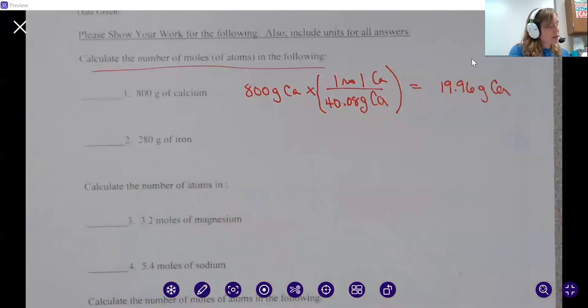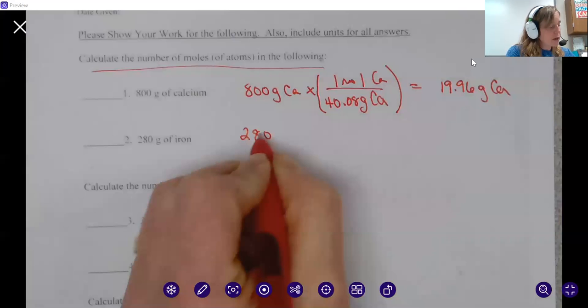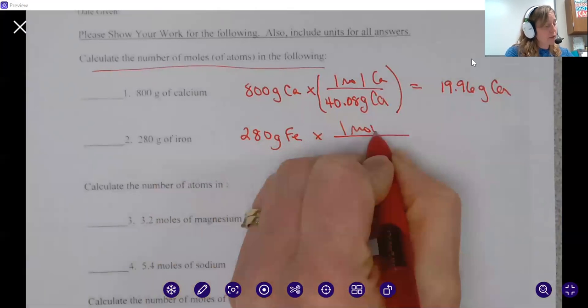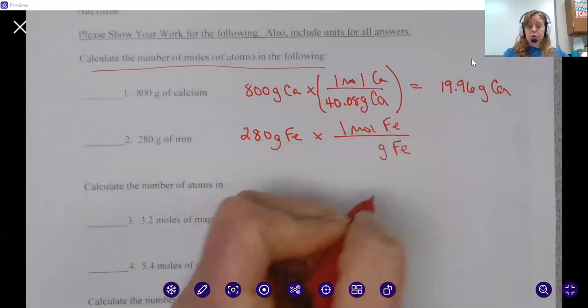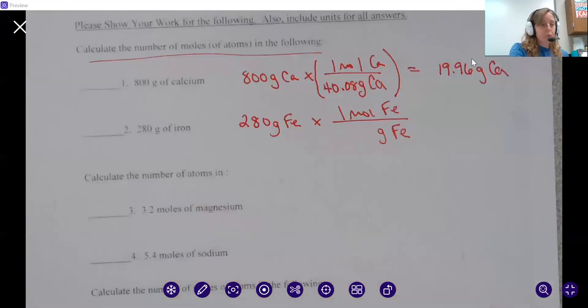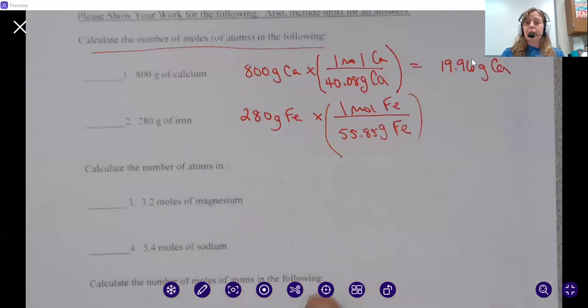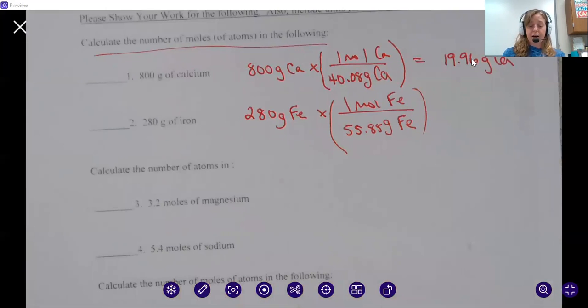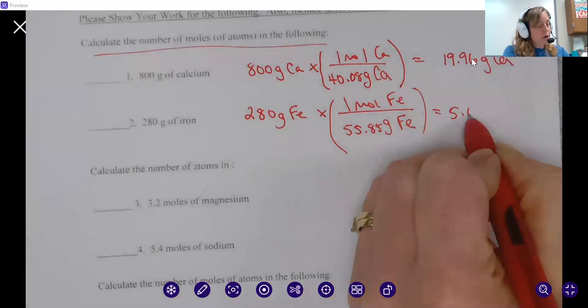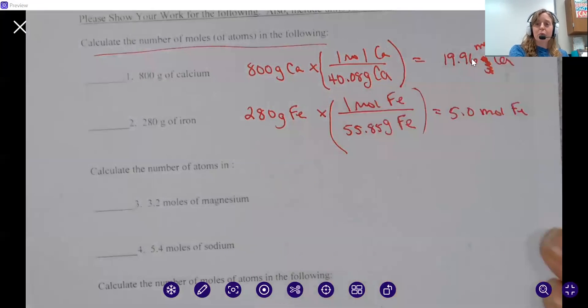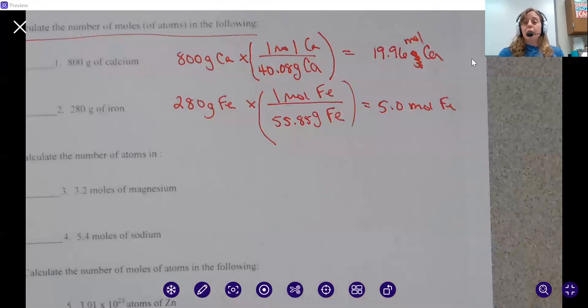Let's try the next one. We have 280 grams of iron, and we're trying to find moles of iron. One mole of iron equals the atomic mass of iron, which is Fe at 55.85. Now we take 280 times one over 55.85, and that gives us an answer of 5.00 moles of iron. Nobody caught this in the last one, but I accidentally wrote grams instead of moles for my unit there. Sorry about that. In that situation, we're going from mass to moles, grams to moles.